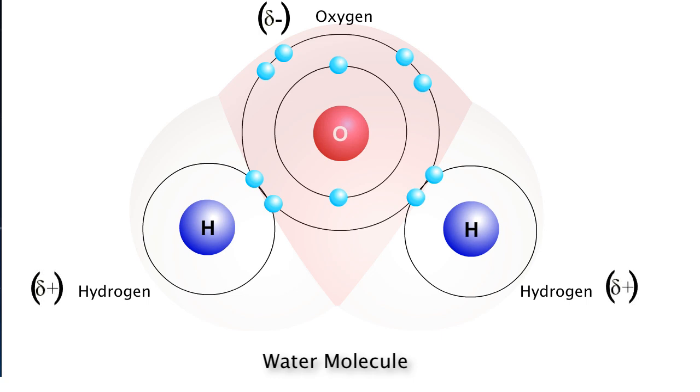This causes the bond between the oxygen and hydrogen to become polar. The term polar simply means that the atoms on either side of the bond have a partial and opposite charge.